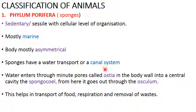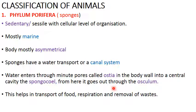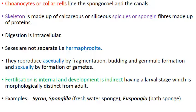This is the canal system. Through this canal system — since sponges are mostly marine — water flows. Water enters through the minute pores on their body called ostia, leads into the central cavity called the spongocoel, and exits through the osculum. This canal system helps in transport of food, respiration with dissolved oxygen from the water, and removal of waste through the osculum.